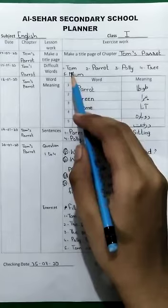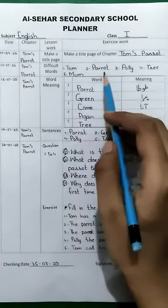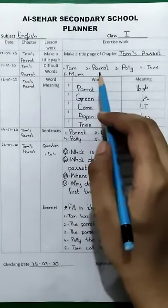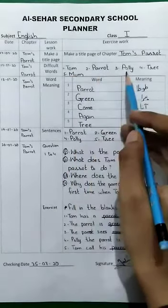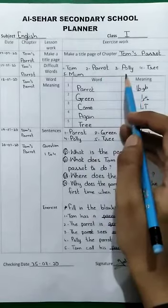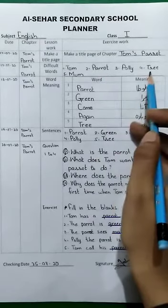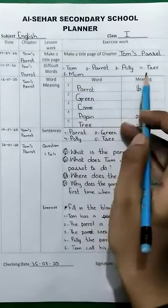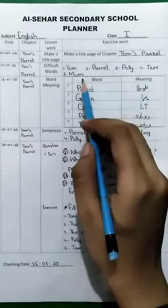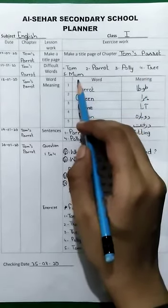Difficult words are: Tom, parrot, Polly, tree, mum.